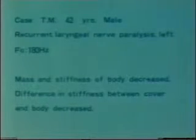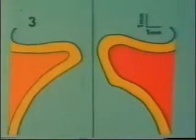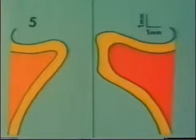In recurrent laryngeal nerve paralysis, mass and stiffness of the body are decreased, and therefore the difference in stiffness between the cover and the body is decreased. The left paretic vocal cord is seen on the left side, unlike a normal face-to-face examination. It moves like a flag flapping in the wind, presenting a missing motion. Very small waves are seen on the paretic cord. The glottis remains open throughout. This shows the behavior of the layered structure schematically.